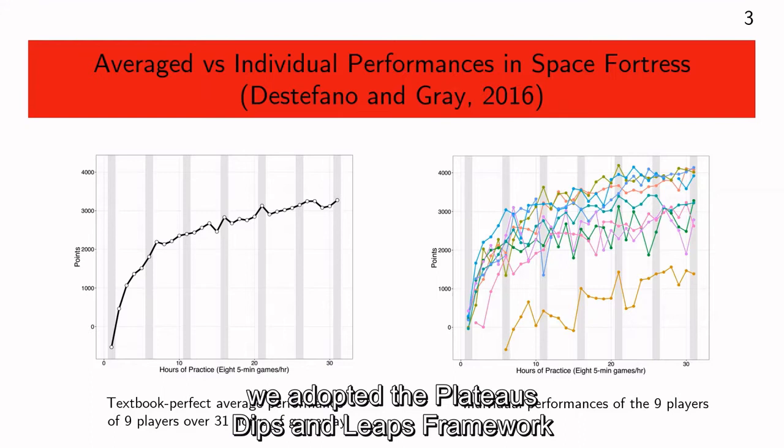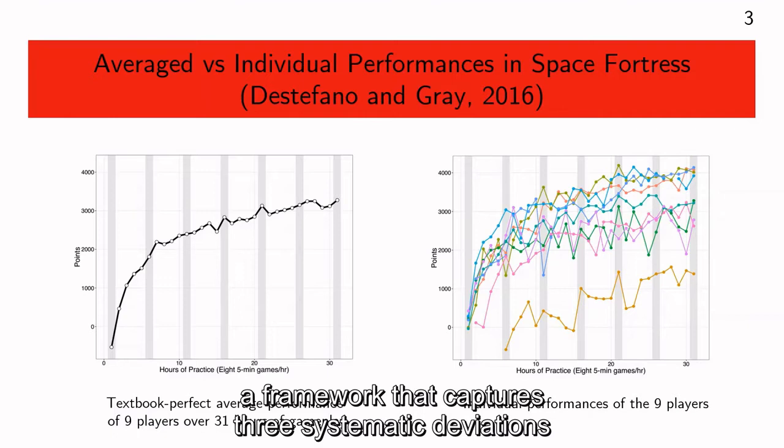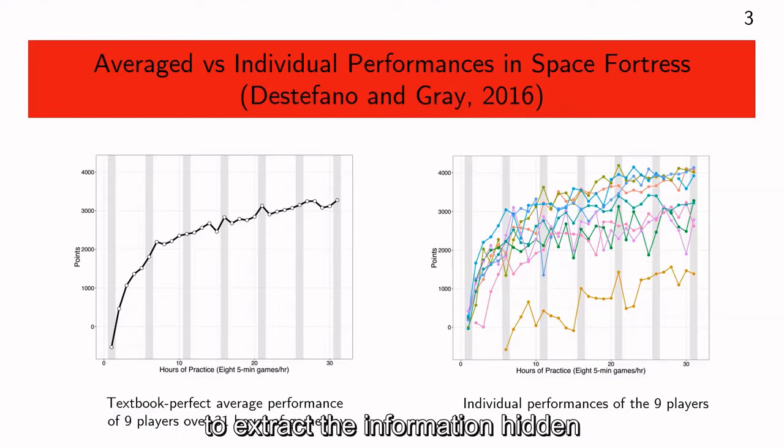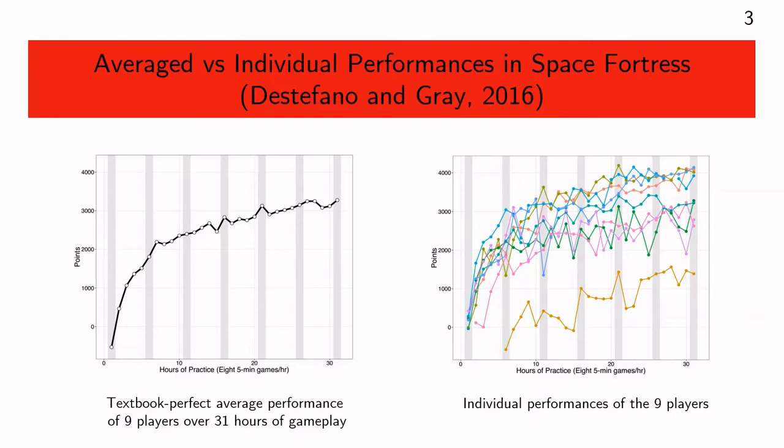We adopted the plateau, dips, and leaps framework developed by Gray and Nielsen — a framework that captures three systematic deviations in the ups and downs of individual performances. In this talk, I will discuss our efforts to extract the information hidden in plateaus, dips, and leaps during an individual's learning, and conclude with some findings and promising directions for understanding individual learning.